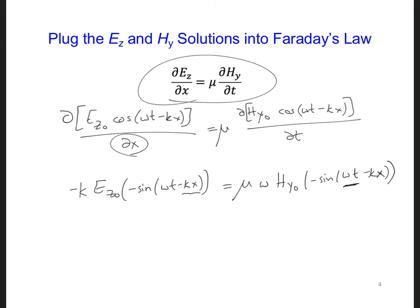Now we can solve for either E z naught or H y naught. Let's go ahead and solve for H y naught. We can do this by dividing the entire equation by mu omega and this sine term. And since the sine terms are going to cancel, what we're going to wind up with is H y naught is minus k over omega mu times E z naught.